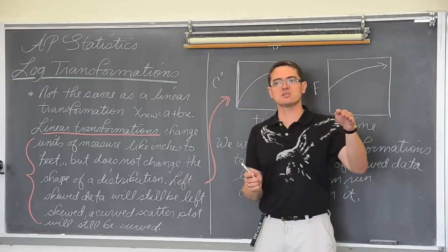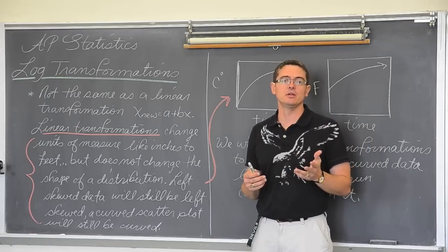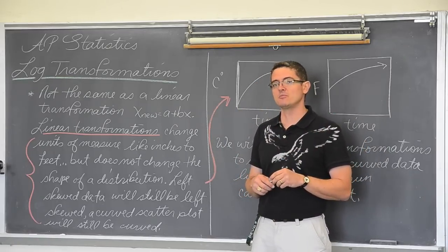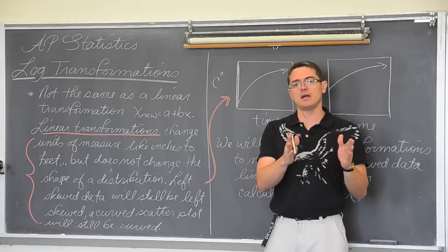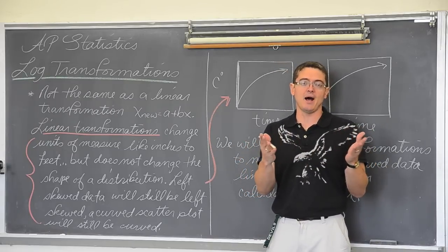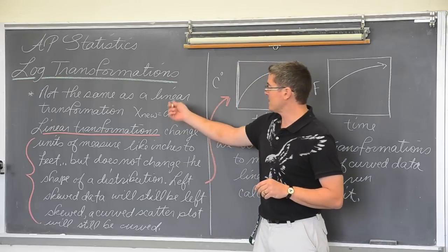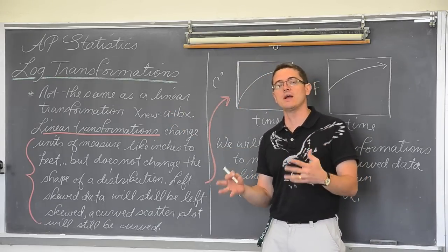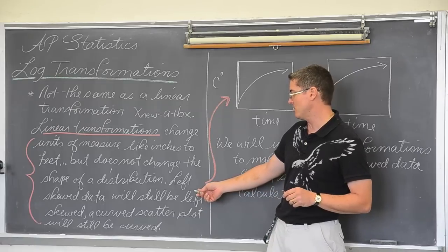If you're talking about a histogram that is maybe left skewed, if you go from inches to feet, then it's still going to be a left skewed distribution. It will move left and right on the number line and expand and contract, possibly if there's a multiplication, like as a form of b. But if it's left skewed, it will still be left skewed. If it's right skewed, it will still be right skewed.